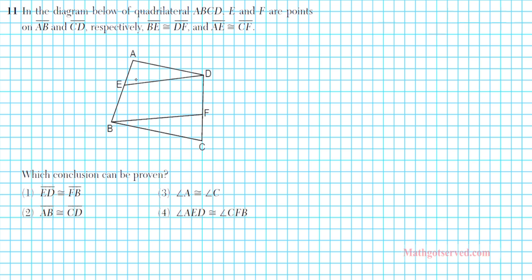BE and DF are congruent, so this segment is congruent to this segment. AE is congruent to CF. So just by inspection, what can you conclude? Well, you can conclude that this entire length AB is congruent to this entire length CD. So option 2 looks like the apparent answer — just by inspection we can see that.